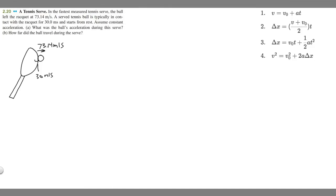In this problem we're told that in the fastest measured tennis serve, the ball left the racket at 73.14 meters per second. A served tennis ball is typically in contact with a racket for 30 milliseconds and starts from rest. Assume constant acceleration. In part A, find the ball's acceleration during the serve, and in part B, find how far the ball traveled during the serve.